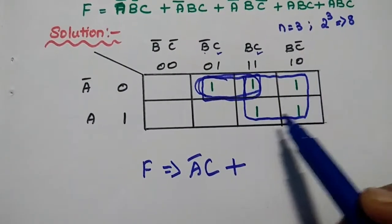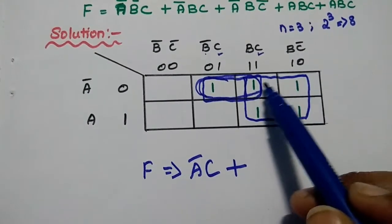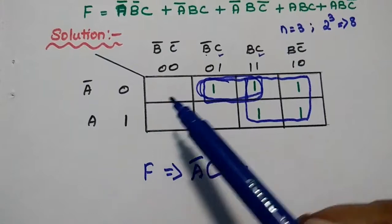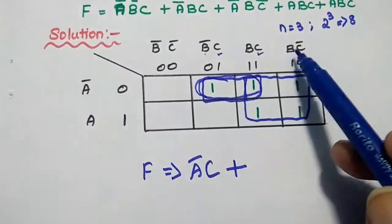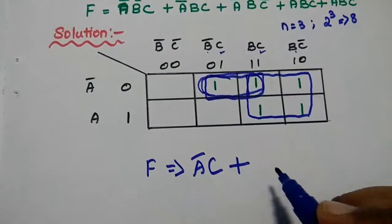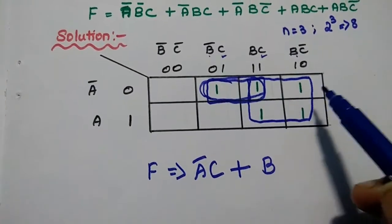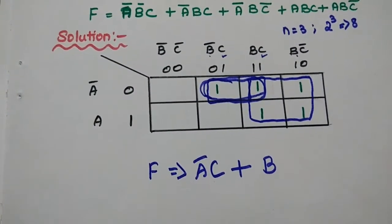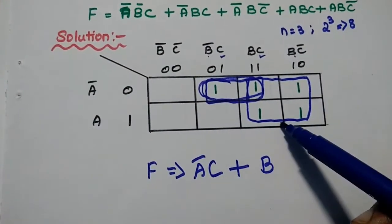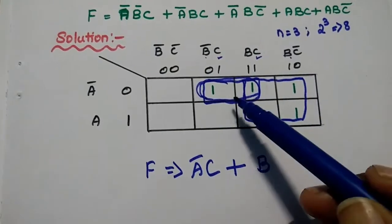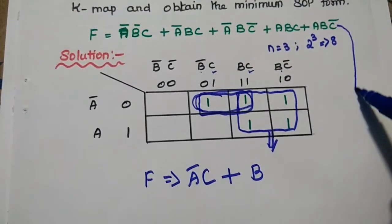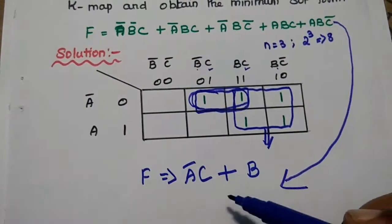Since we are talking about sum of products, each group is represented with its product term. For the second group of 2, the common row term: A̅ and A cancel, so there is no row variable. For the columns, B is common and C̄ appears, so we consider only B. This group is represented as B. Finally, summing all product terms: the complex Boolean expression is simplified as F = A̅C + B. This is the answer.